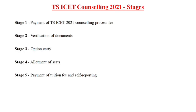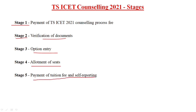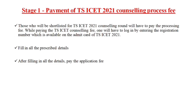The counseling has five stages. Stage one: payment of counseling processing fee. Stage two: verification of documents. Stage three: option entry. Stage four: allotment of seats. Stage five: payment of tuition fee and self-reporting.